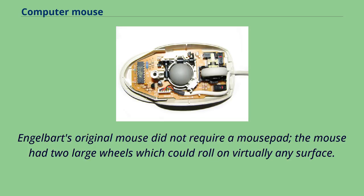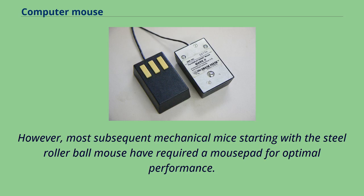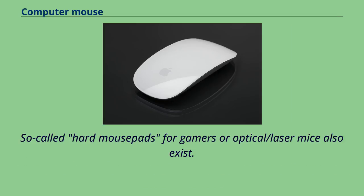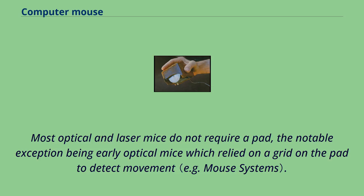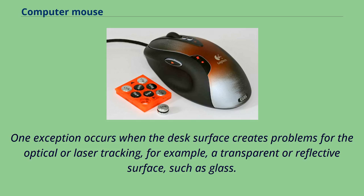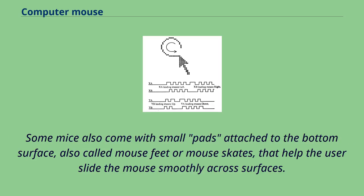Engelbart's original mouse did not require a mousepad, as it had two large wheels which could roll on virtually any surface. However, most subsequent mechanical mice starting with the steel roller ball mouse have required a mousepad for optimal performance. The mousepad, the most common mouse accessory, appears most commonly with mechanical mice because the ball requires more friction than common desk surfaces provide. Most optical and laser mice do not require a pad — the notable exception being early optical mice which relied on a grid on the pad to detect movement. Some mice also come with small pads on the bottom surface, called mouse feet or mouse skates, that help the user slide the mouse smoothly.